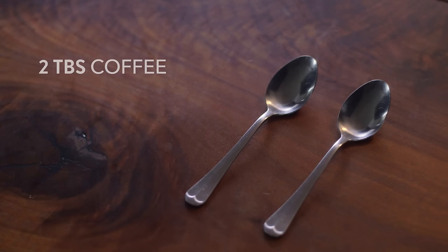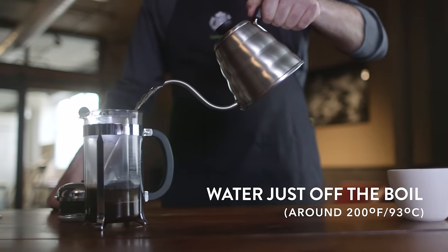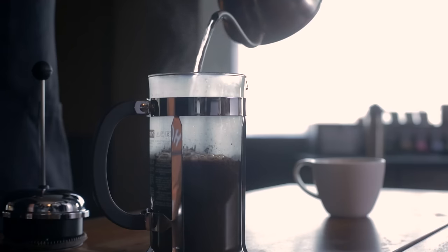We recommend two tablespoons of coffee per six ounces of water. Add the hot water and the water should be right off boil. So boil the water, take it off, let it sit for about 30 seconds,